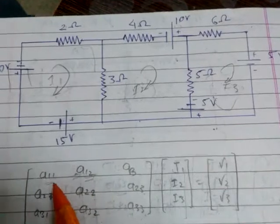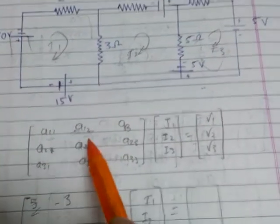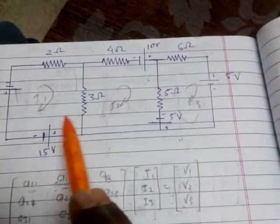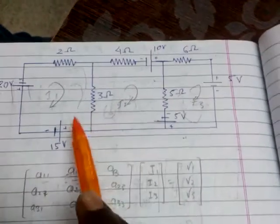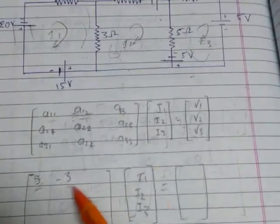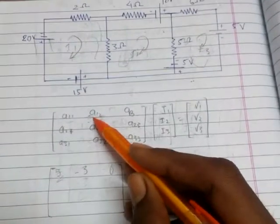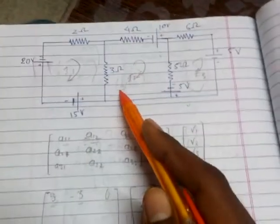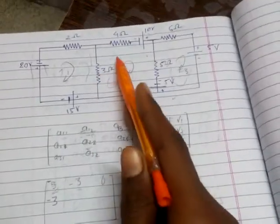For a11, sum all resistances in loop 1: 2 plus 3 equals 5. For a12, take the common resistance between loops 1 and 2, which is 3; since currents go in opposite directions, it is minus 3. For a13, there is no common resistance between loops 1 and 3, so it is 0. By symmetry, a21 equals minus 3. For a22, sum all resistances in loop 2: 3 plus 4 plus 5 equals 12.